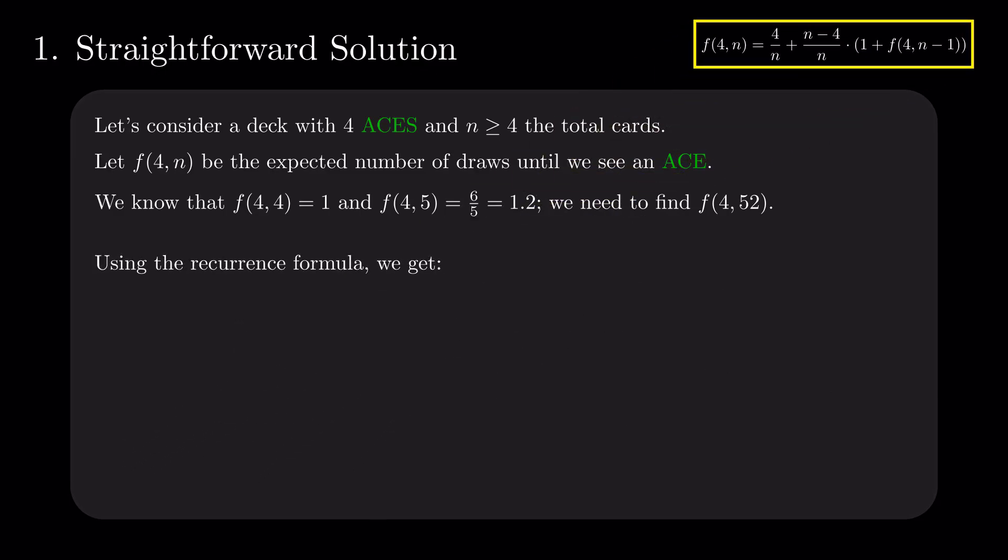Using this formula, we get that f of 4 and 6 is 1.4, and f of 4 and 7 is 1.6. We can already see that the pattern emerges, and then use mathematical induction to prove that f of 4 and n is n plus 1 divided by 5.